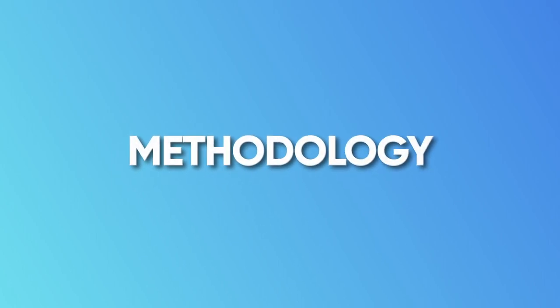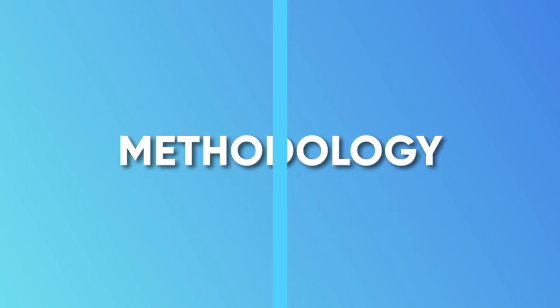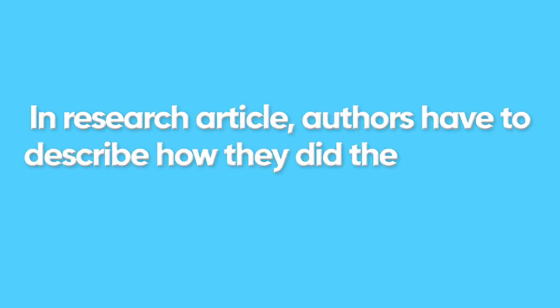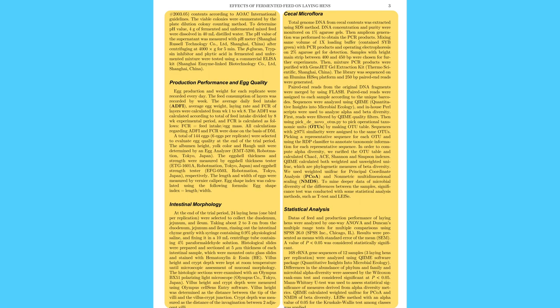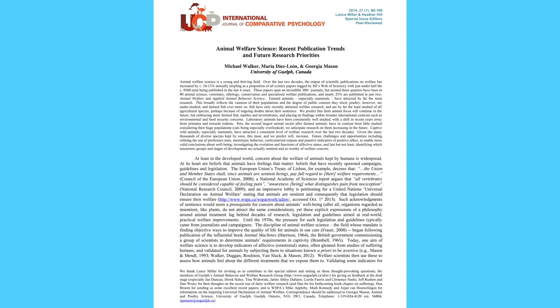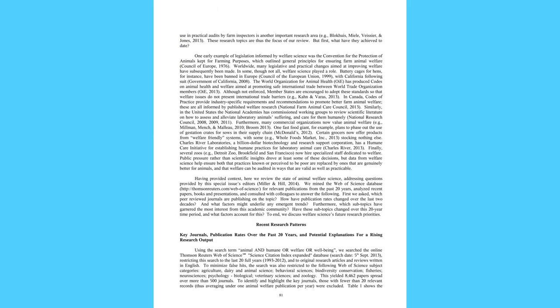An important difference between a research and review article is also methodology. In a research article, authors have to describe how they did their study in detail. For example, if you look at this paper, you can see the detailed methods section. Whereas if you look at this review article, there is literally no methodology — they only have a few lines where they have described how they searched for the papers.